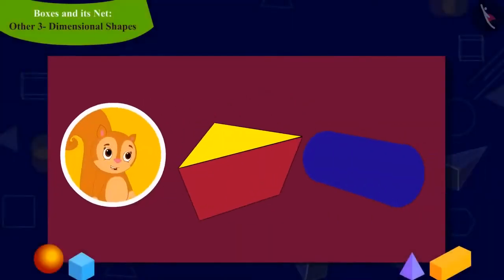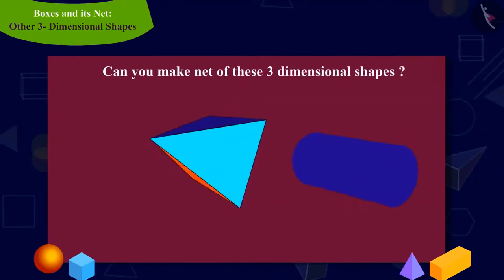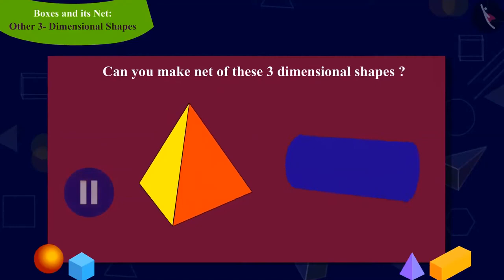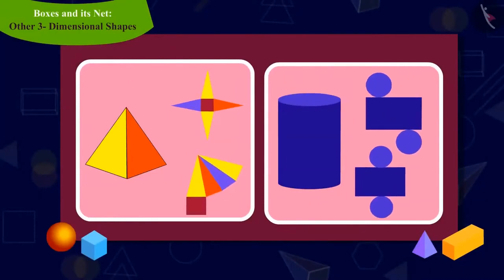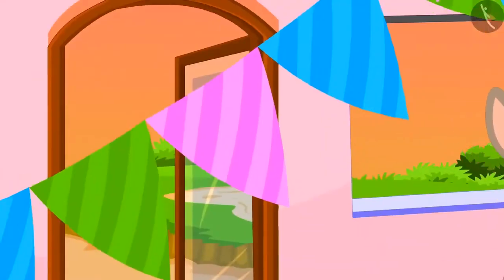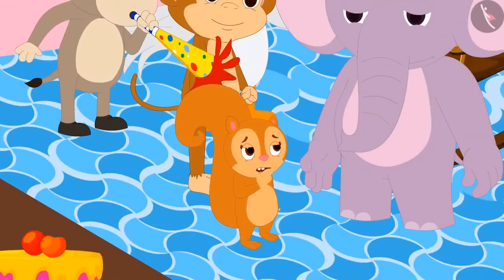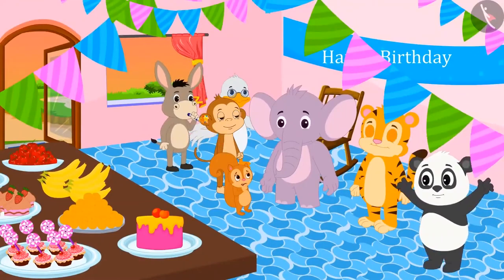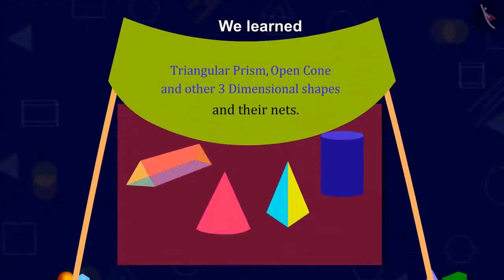Chanda saw two more such shapes in the party. Can you help Chanda make nets of these shapes? You can find the answer by pausing the video. You have found the right answer — you can draw shapes in these ways. Chanda is now roaming around the party, looking at other shapes and thinking about how to make nets of them. You should also look at shapes of objects around you and try to make the shape of their net. In this lesson we have learned about triangular prisms, open cones, and other three-dimensional shapes and their nets.